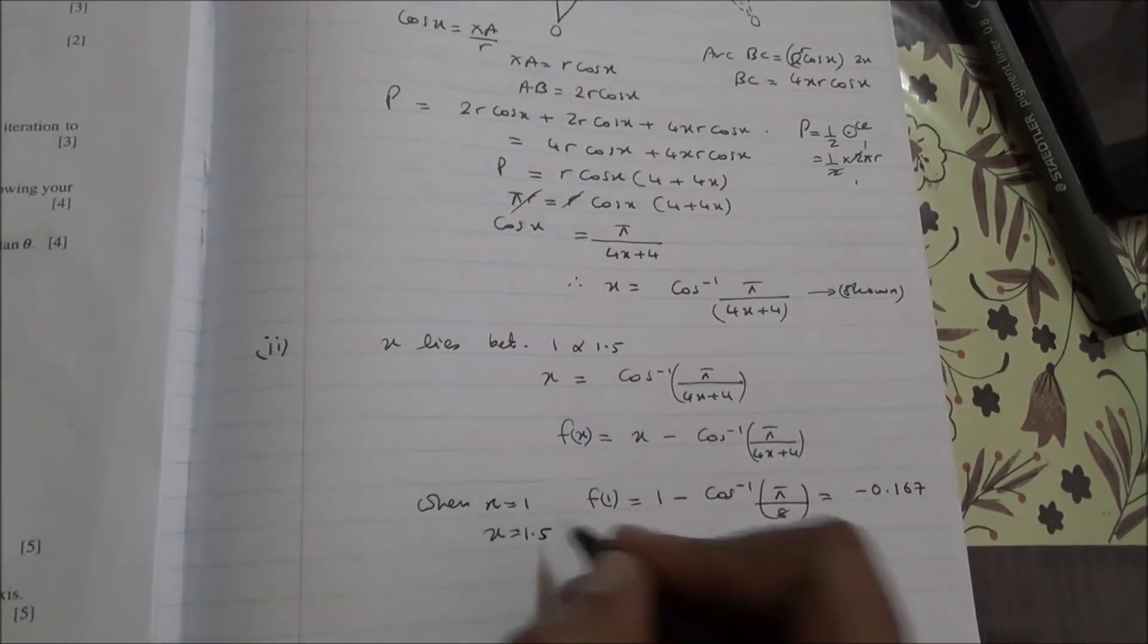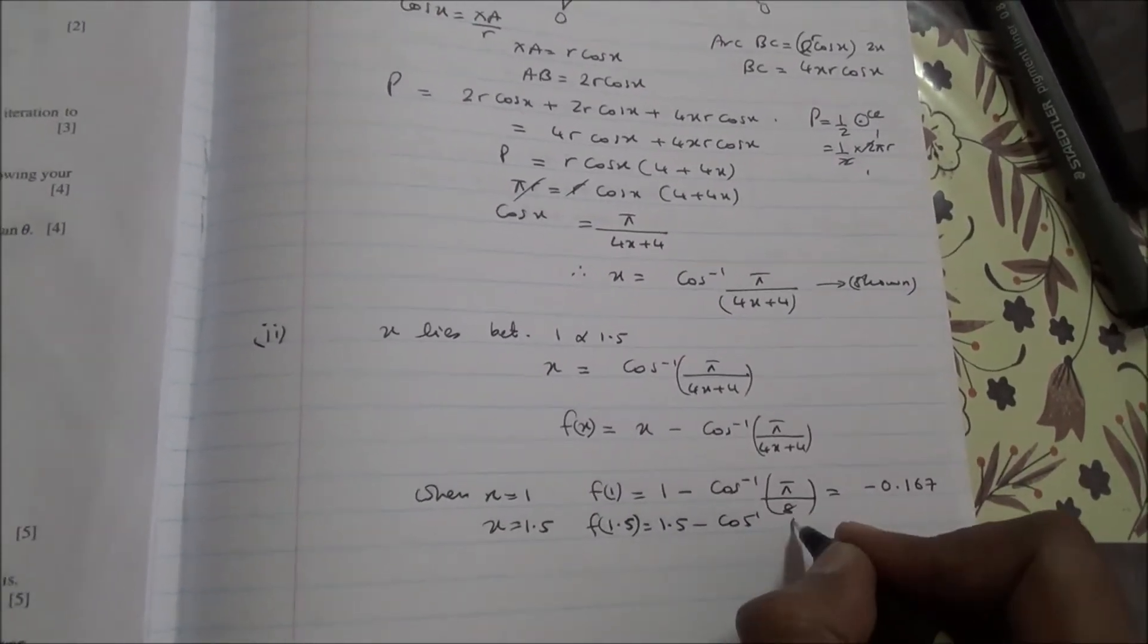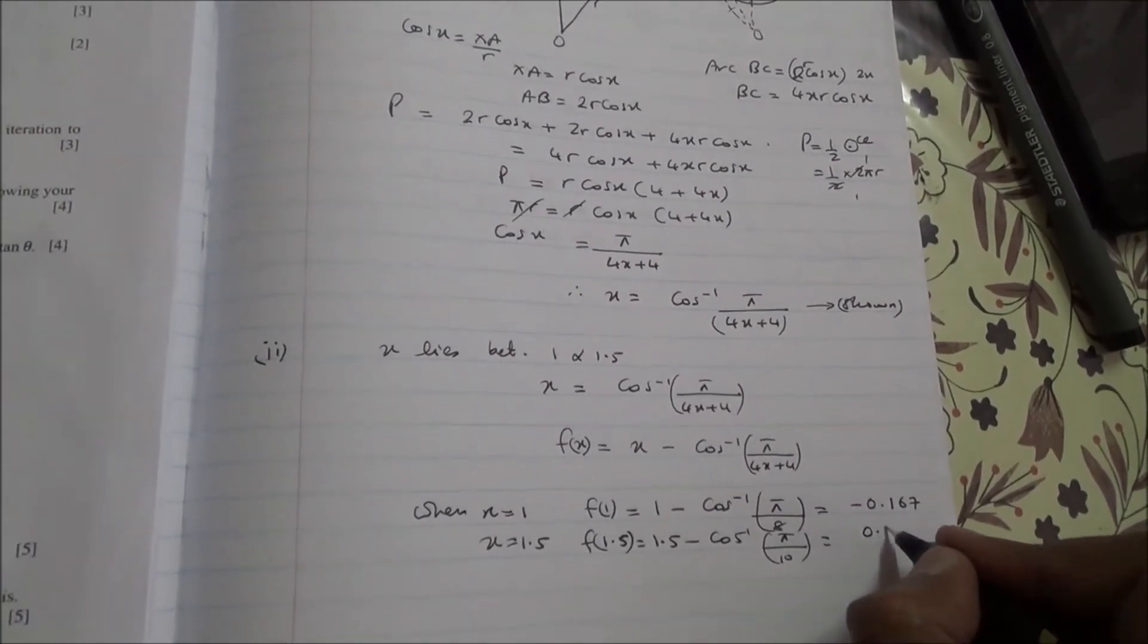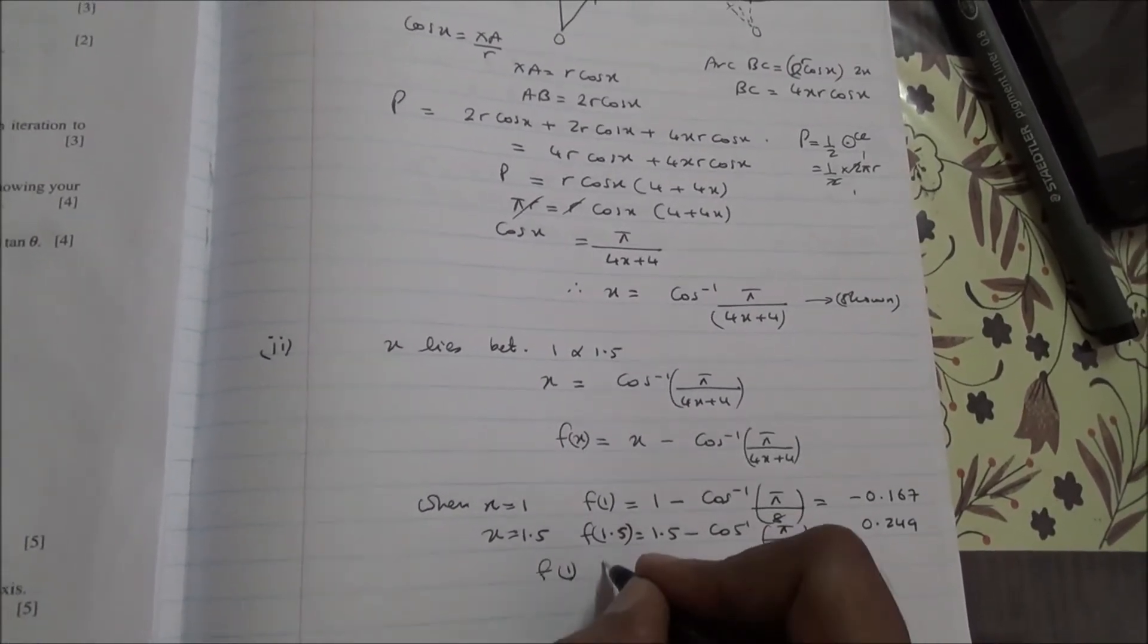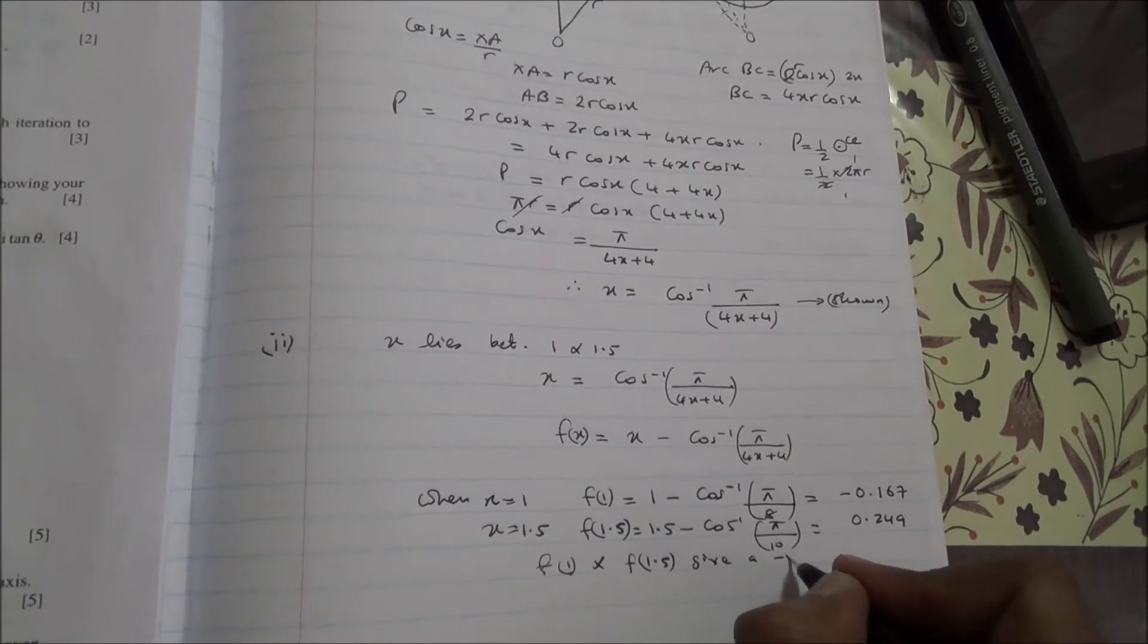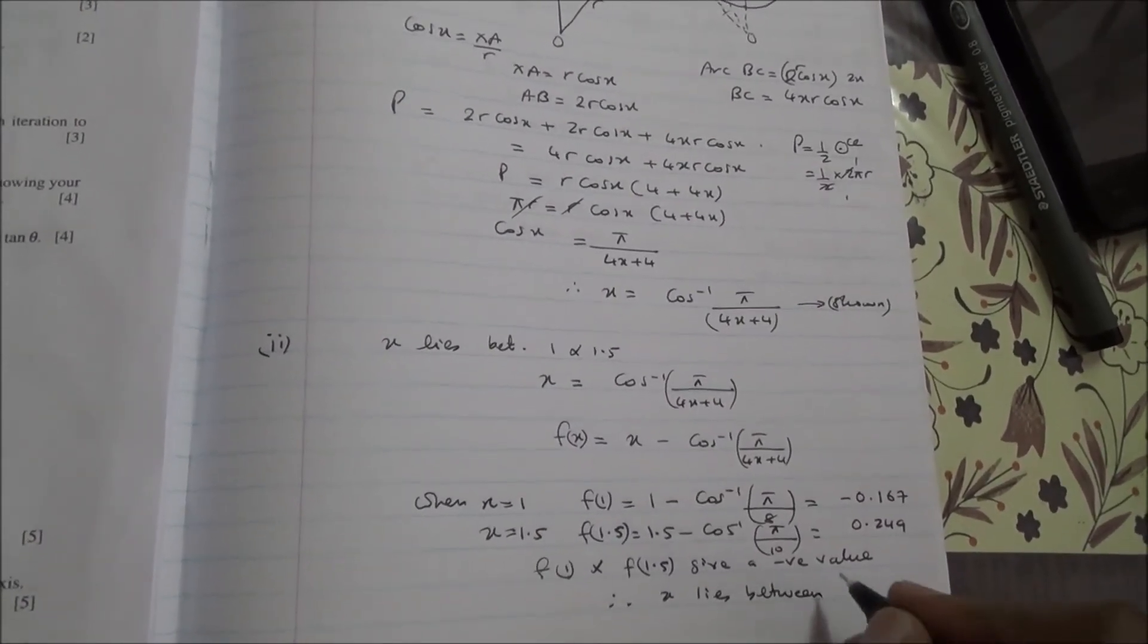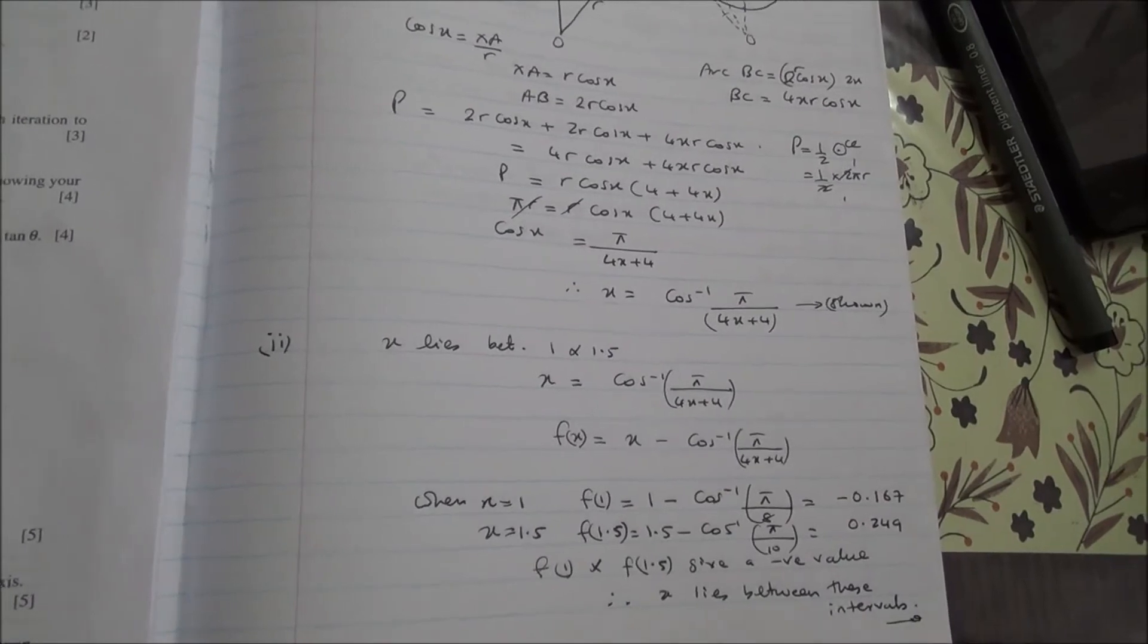Similarly, if you do X is equal to 1.5, so F(1.5) is going to be 1.5 minus inverse cos of 4 times 1.5 is 6, 6 plus 4 is 10. And if you do that in your calculator, you'll see that you end up with 0.249. Now what we observe is that F(1) times F(1.5) gives a negative value. Therefore, X lies between these intervals. Here we are for the second part.